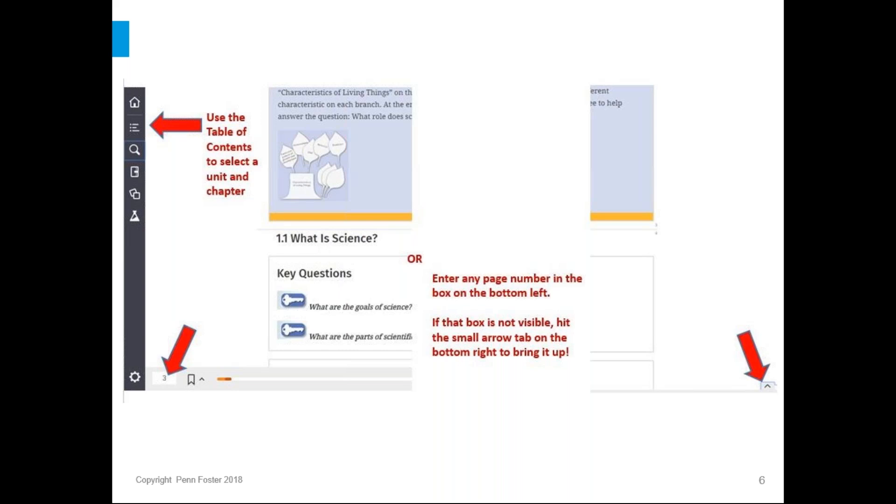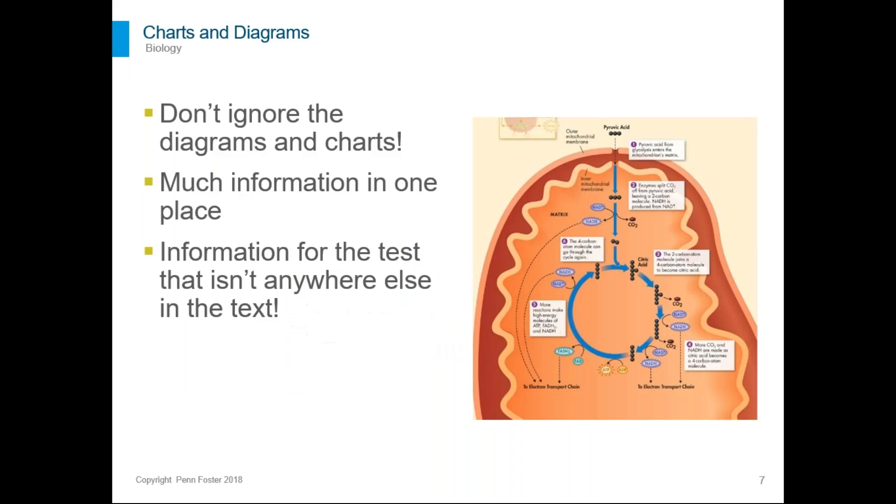You can also just jump to a certain page so the arrow on the bottom left here is pointing to a box where you can type in a page number. And if you don't see it, the arrow on the bottom right here is pointing to a tiny little tab with an arrow. If you click on that that'll bring up the box where you can put in a specific page number. So that's how you navigate around the e-book. Again, if you're getting them mailed out then you don't have an e-book.